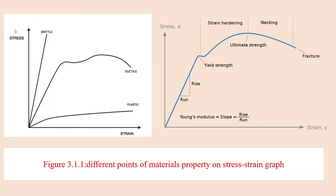Last time we covered the stress-strain graph showing different types of materials — brittle material, plastic material, ductile material, and so on. Different points were discussed, like the point of elastic limit and the point of fracture, as seen in that graph.